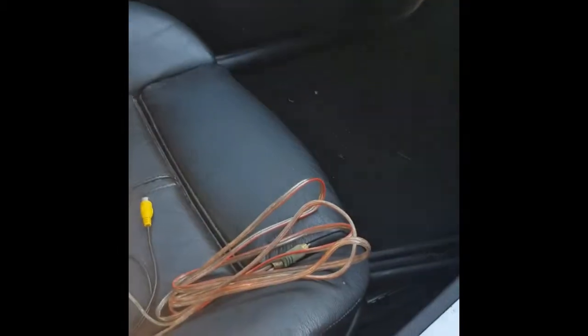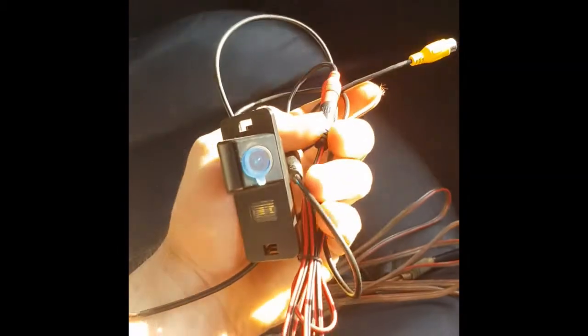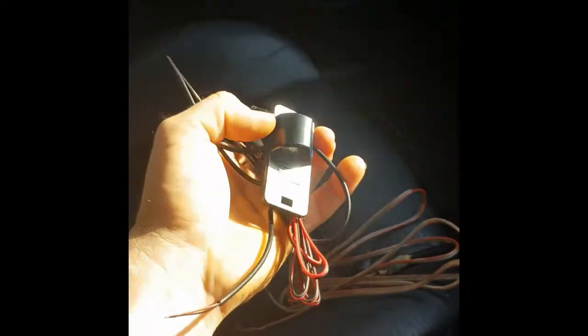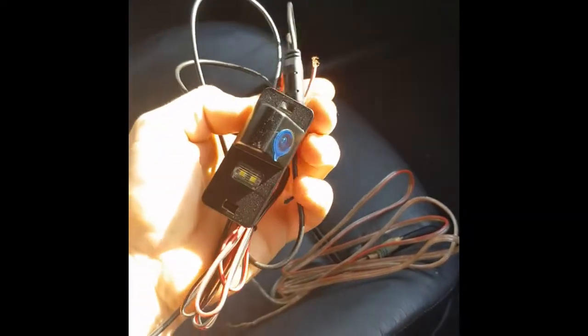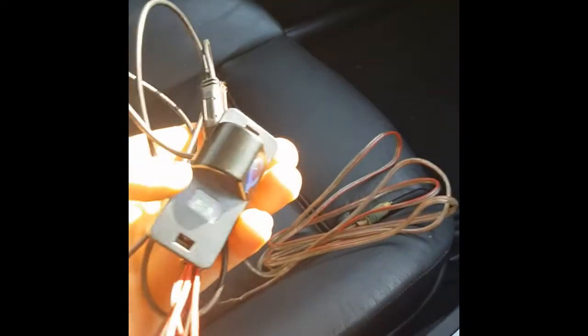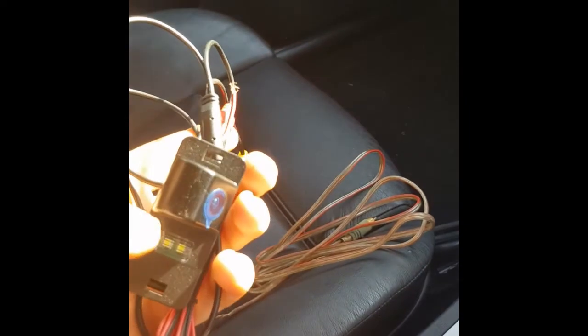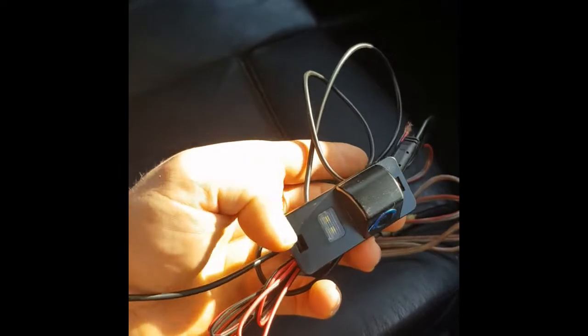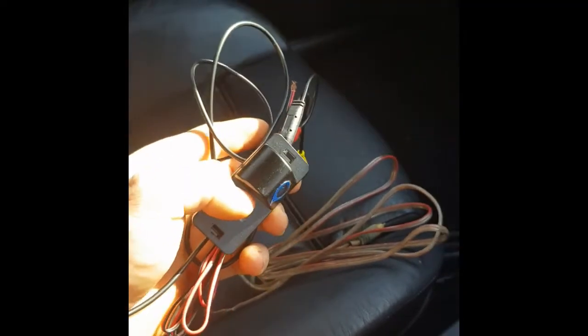The reverse camera we will be using is this unit here. This is about $10 and this is a Chinese one I got from AliExpress. There are several different versions of these available. Most of them are combined with the switch for the trunk release. This one here has the built-in number plate light as well.